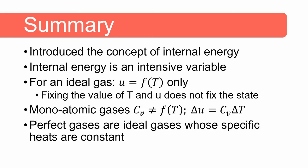In summary, we introduced internal energy as the sum total of all microscopic forms of energy. Internal energy is an intensive variable, so its value combined with another intensive variable fixes the state and allows calculation of other intensive variables. For an ideal gas, internal energy is a function of temperature only, and T and U are not independent. For monoatomic gases with temperature-independent specific heats, we use delta U = Cv * delta T. Perfect gases are ideal gases with constant specific heats.